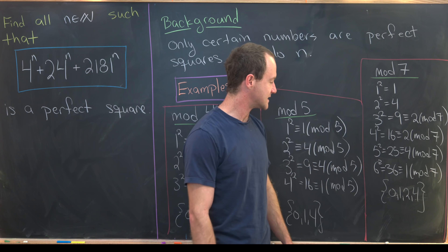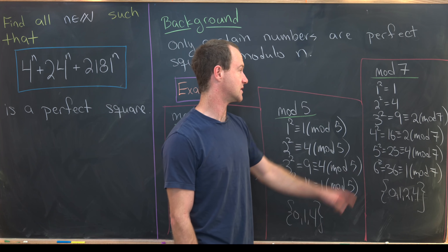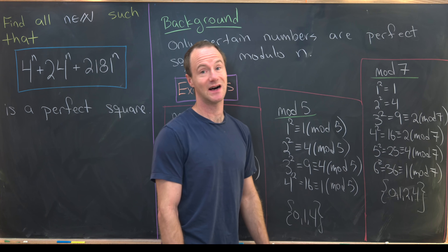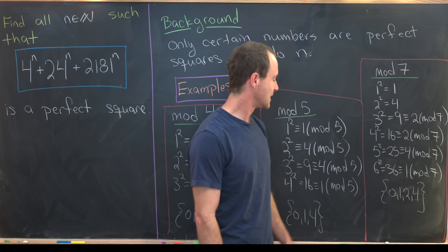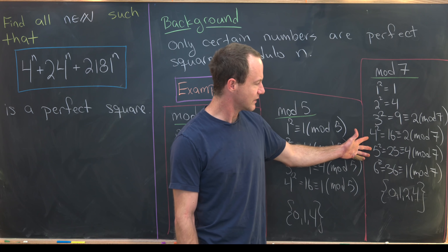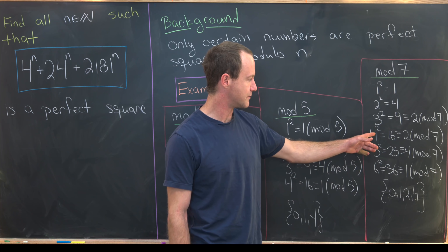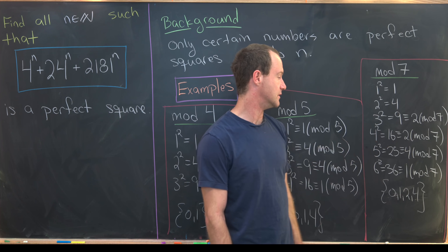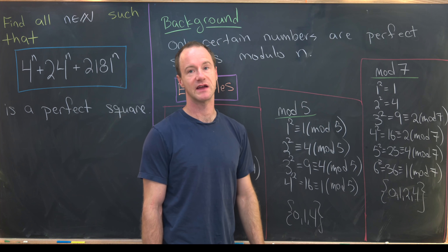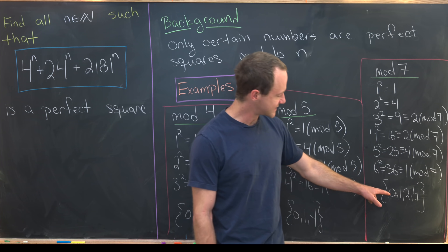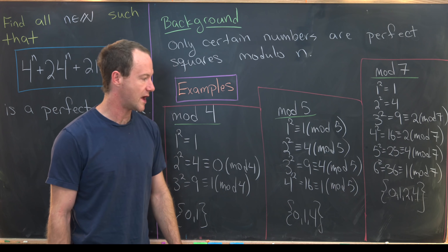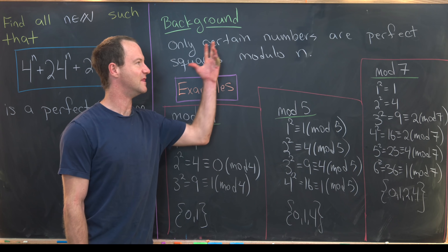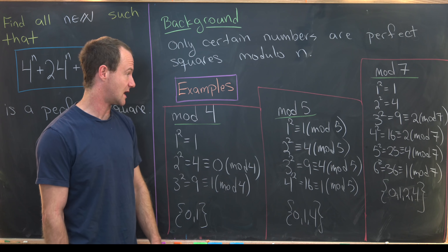Working mod 7, we do the same calculation: 1²=1, 2²=4, 3²=9≡2 mod 7. For 4, 5, and 6 we note that 4≡−3, 5≡−2, 6≡−1, so squaring gives the same results. That tells us the perfect squares mod 7 are 0, 1, 2, and 4.